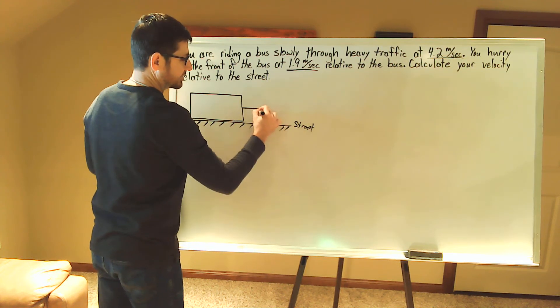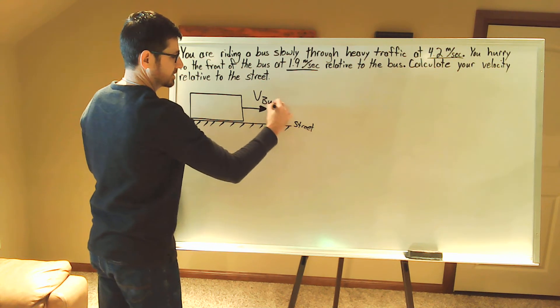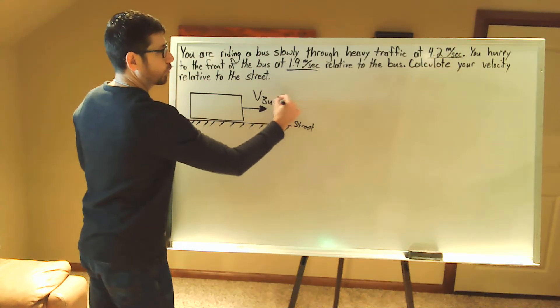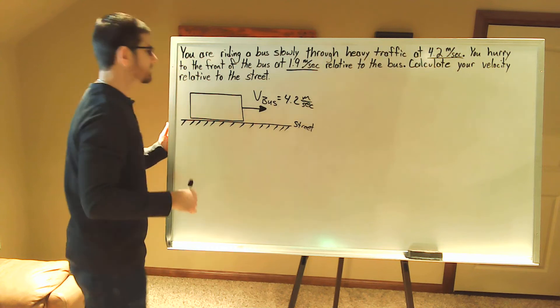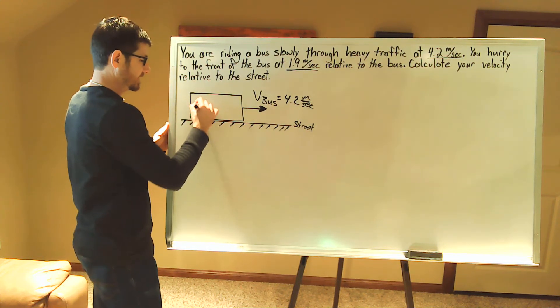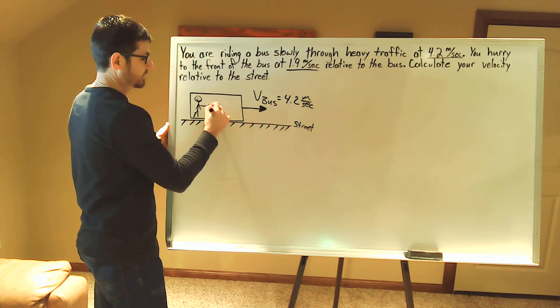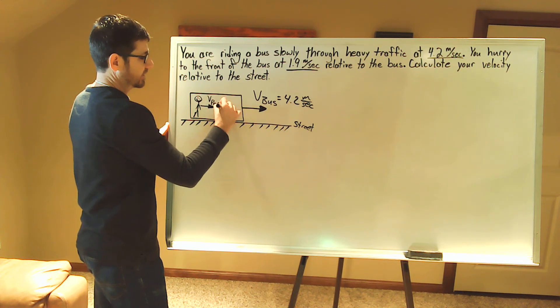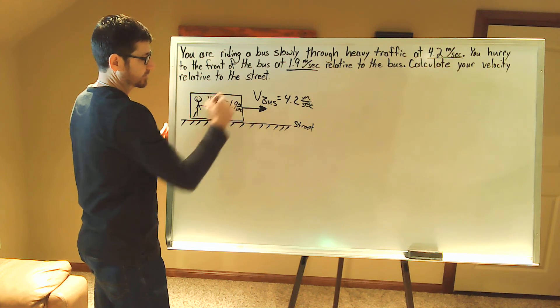We have the velocity of the bus, so I'm going to use subscript bus, and then that is 4.2 meters per second. And then it says you are running towards the front of the bus at 1.9 meters per second. So I'll just say the velocity of the person is 1.9 meters per second.